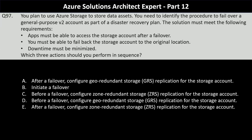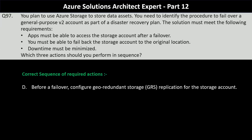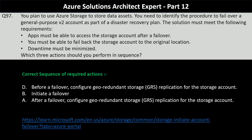The correct sequence is: first, configure geo-redundant storage replication for the storage account. GRS replicates data asynchronously to a secondary region, ensuring data is available in another Azure region for disaster recovery. This is followed by initiating a failover. After the failover, your storage account is automatically converted to locally redundant storage in the new primary region, so you need to re-enable geo-redundant storage as the final step. A link on your screen provides more details about the storage account failover process.